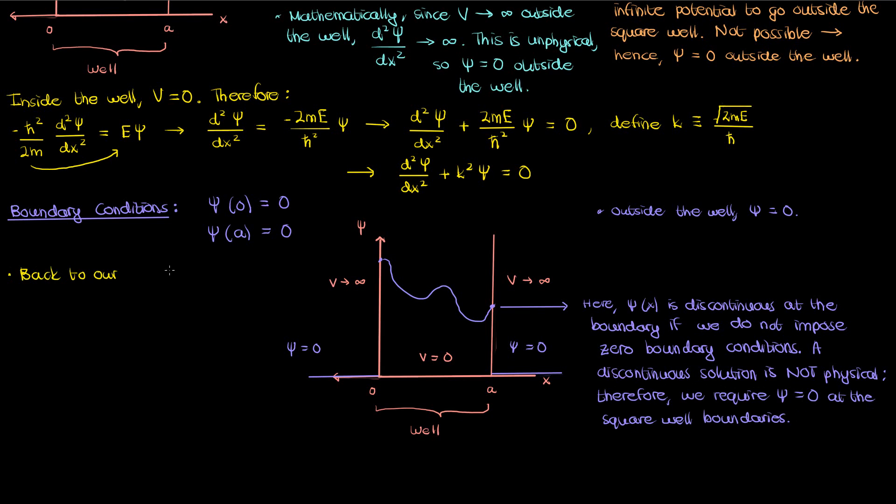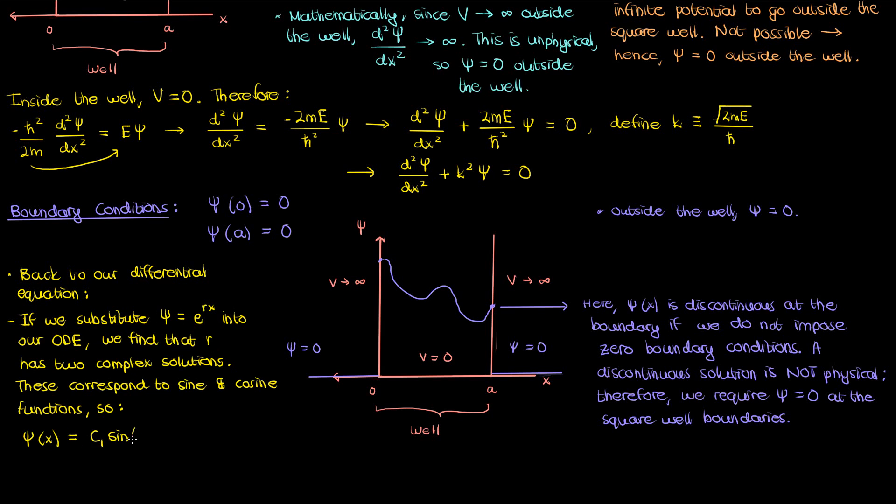So now we've got a differential equation with its associated boundary conditions. Let's use this to solve for small psi of x. The differential equation we've got has the classic sine cosine solution. Just substitute e to the rx in there and you'll get complex values for r which also correspond to sine and cosine functions. In the end you'll find the solution for psi in terms of sine and cosine where c1 and c2 are unknown constants found using the boundary conditions.